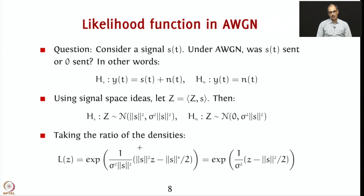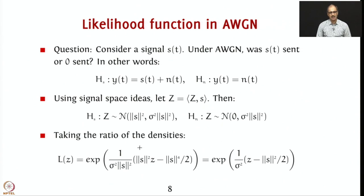A recipe that we want to use is the so-called likelihood function. Whenever we have any signal in AWGN, one question we can ask is: was S(t) actually sent or was 0 sent? This is very similar to the binary signaling we checked earlier, except that in this case we want to detect whether a particular signal S(t) was sent or not. To do this we can appeal to the same hypothesis testing discussion we considered during detection — in this case we want to discuss the presence or absence of a symbol.